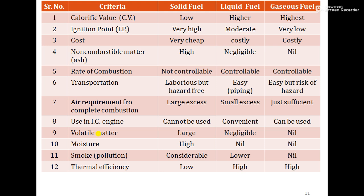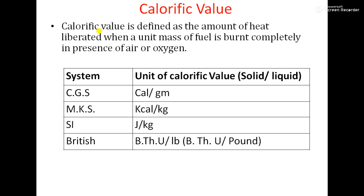A comparison chart helps identify a good fuel. The columns are serial number, criteria or characteristics, solid fuel, liquid fuel, and gaseous fuel. For example, moisture content of solid fuel such as coal or wood is higher, while for liquid and gaseous fuel it is nil. Ignition point is very high for solid, moderate for liquid, and very low for gaseous fuel. Next is calorific value and its units.